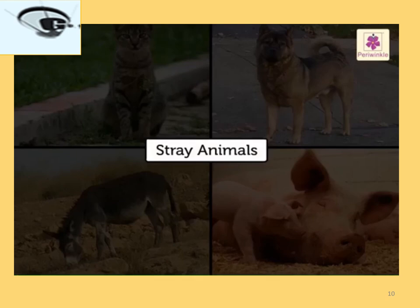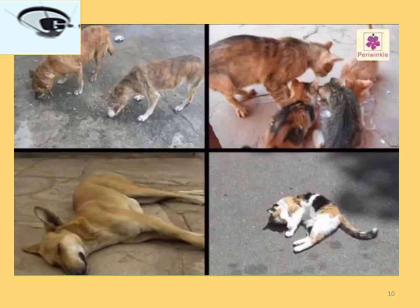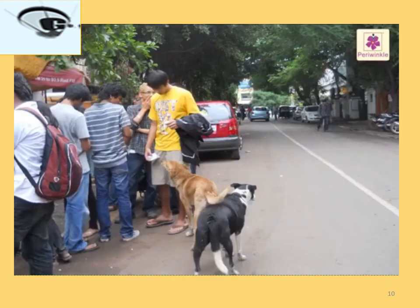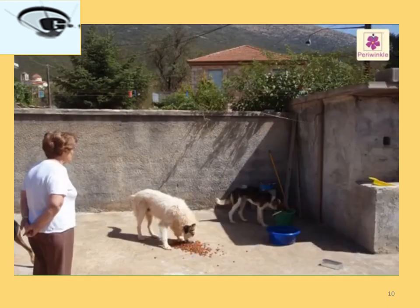Stray animals are animals that do not have a home and live on the streets. You may have seen dogs and cats eating, sleeping or roaming on the streets. Though stray animals are tame, we should avoid touching them. We can feed them from a distance.